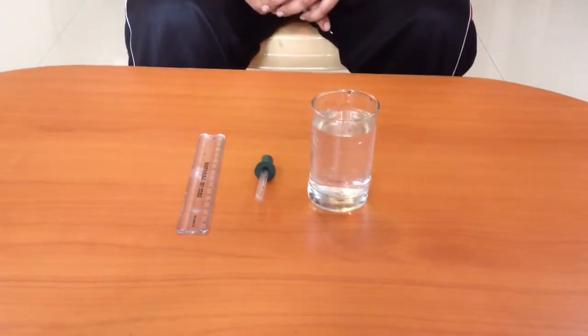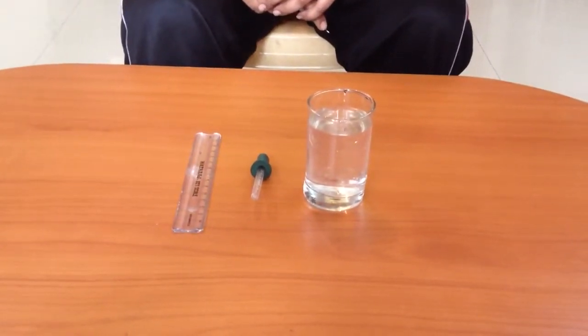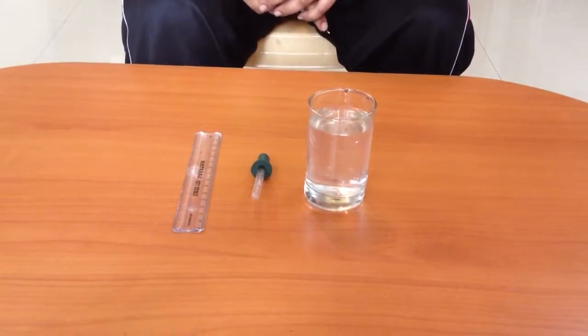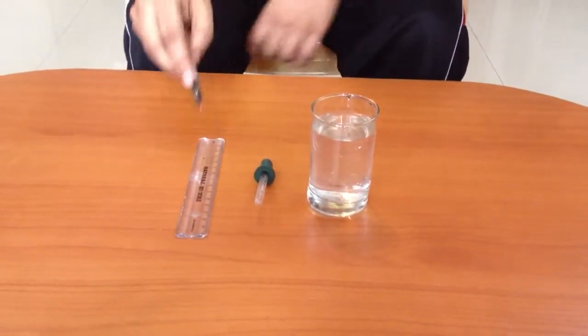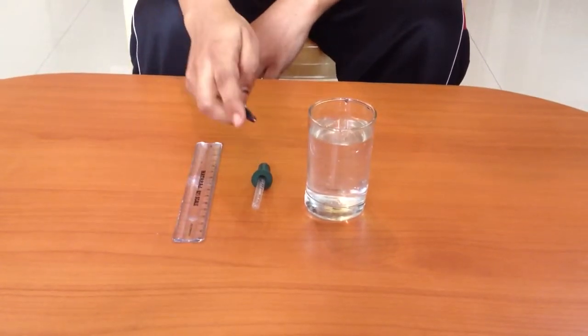In this activity we will demonstrate how surface tension causes the water to behave like a glue. For this activity we need a plastic scale, dropper and water.